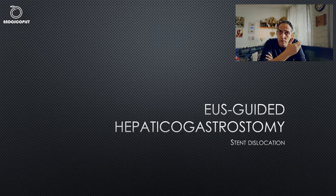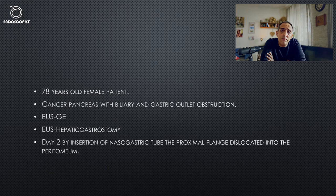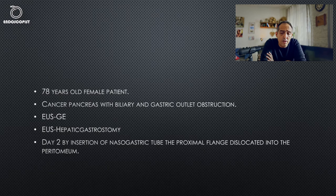We have a 78-year-old female patient with pancreatic cancer presenting with both biliary and gastric outlet obstruction. We first inserted an EOS-guided gastroenterostomy, and a few weeks later, because of cholestasis, we inserted a hepatic gastrostomy. At the ward, two days later, a nasogastric tube was inserted because of nausea.